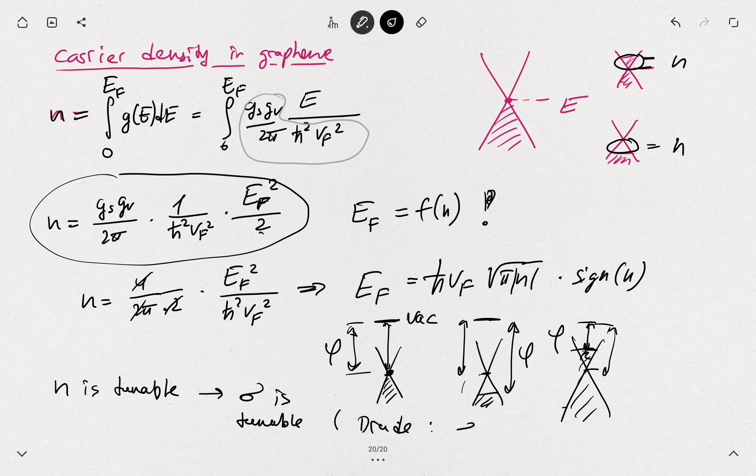Using a Drude model. Drude, where sigma is n e mu. It's mobility, this is the carrier density. Drude, where I need to check it out. There is a variety of information.